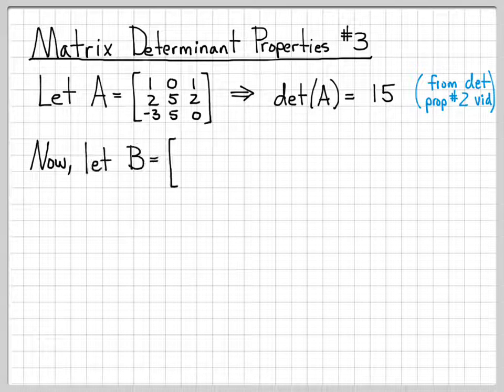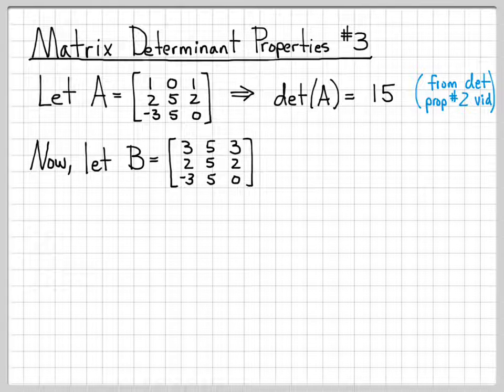What we're going to do in this video is we're going to work with a slightly different matrix B. So B is equal to [3, 5, 3; 2, 5, 2; -3, 5, 0]. So these last two rows of B equal the last two rows of A.